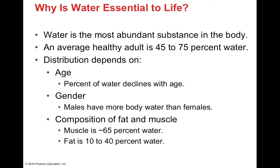Water is the most abundant substance in the human body. We are approximately 45 to 75 percent water on any given day. That distribution can vary depending on many things including age — as we get older, the percent of water in our body declines — and gender. Males have more body water than females because muscle is approximately 65 percent more water than fat, and men typically have more body muscle while females have a bit more body fat.